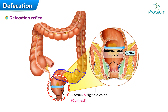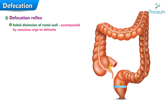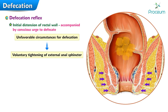If the external anal sphincter, which is skeletal muscle, is also relaxed, defecation occurs. Being skeletal muscle, the external anal sphincter is under voluntary control. The initial distension of the rectal wall is accompanied by the conscious urge to defecate. If circumstances are unfavorable, voluntary tightening of the external anal sphincter can prevent defecation despite the defecation reflex.